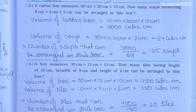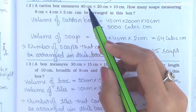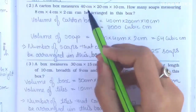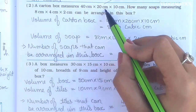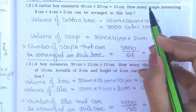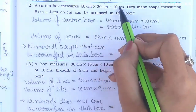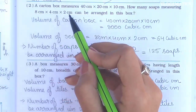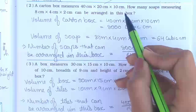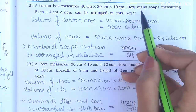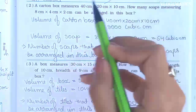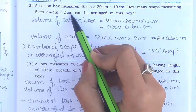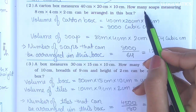Question number 2: A carton box measures 40 cm by 20 cm by 10 cm — it is a cuboid, because length, breadth, and height are different. How many soaps measuring 8 cm by 4 cm by 2 cm can be arranged in this box? We will find how many soaps can be arranged in the carton. The soap measurement is 8 cm × 4 cm × 2 cm.